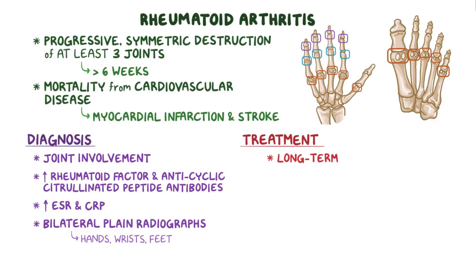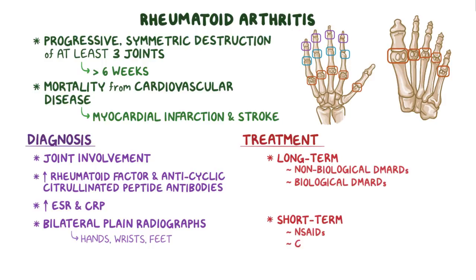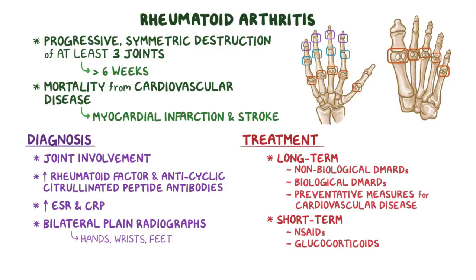The long-term management of rheumatoid arthritis is use of non-biological DMARDs; severe cases get biological DMARDs. Treatment of acute flares can be done with NSAIDs, while more severe flares might require short-term use of glucocorticoids like prednisone. In addition, individuals should take preventative measures for cardiovascular disease, like exercise and smoking cessation, as well as routine use of low doses of aspirin and lipid control with statins.